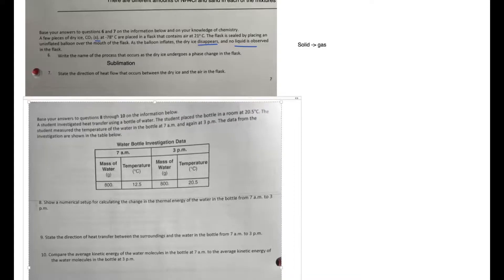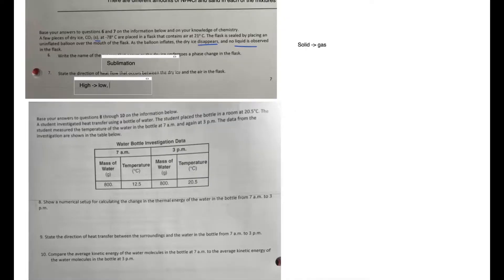Number seven: state the direction of heat flow that occurs between dry ice and the air in the flask. So heat flow, this is another rule you need to know: heat flows from high to low. So we just look at which one had the higher heat to start with. The air was at 21 degrees Celsius, CO2 dry ice at negative 78 degrees Celsius. So the direction of heat flow is from the air to the dry ice.